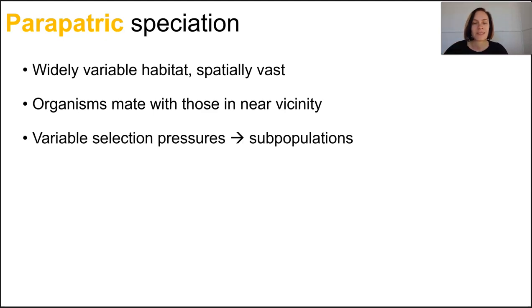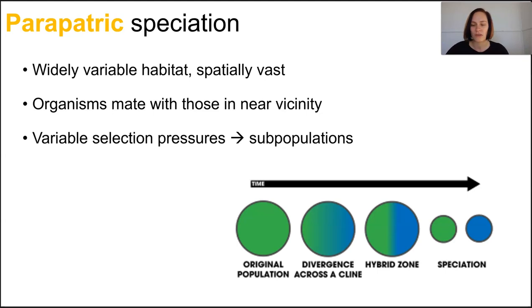With variable selection pressures at different parts of the huge habitat, organisms that are far apart end up with different allele frequencies. Depending on what trait suits them best based on the niche in that part of the habitat, subpopulations form.